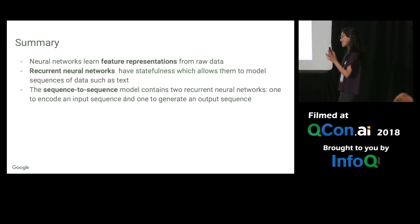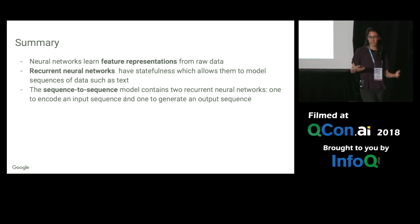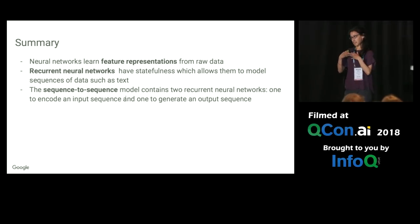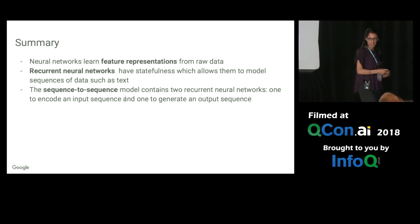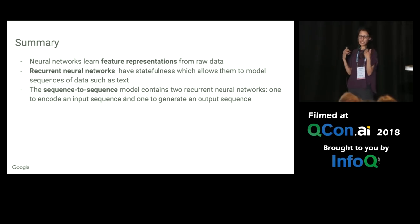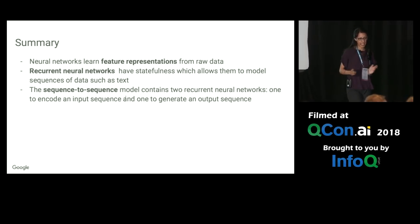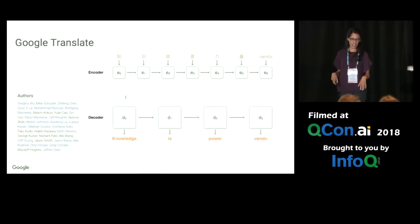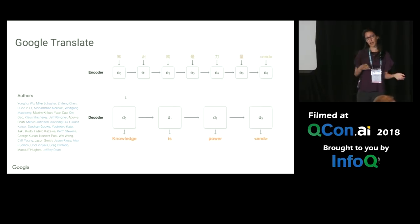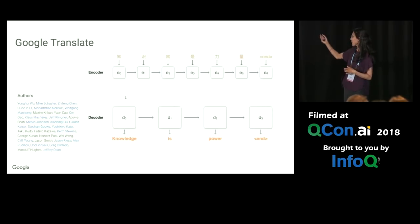The key things I wanted to convey are that neural networks learn feature representations from raw data and reduce the burden of feature engineering. Recurrent neural networks take this one step further and allow you to do this with sequences — they can extract the features from sequences. The sequence-to-sequence model is two of these recurrent neural networks put together, and it can still be trained end-to-end in the same way. A couple quick applications from Google: there was Smart Reply, which I mentioned. Google Translate also uses this type of model — the encoder-decoder — where the encoder is encoding a sentence in one language and the decoder is decoding it into another language. It's basically the same model architecture.